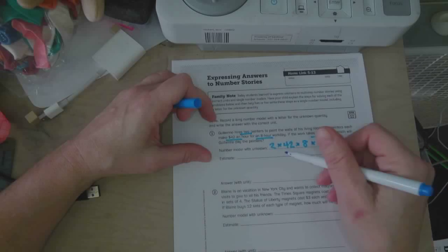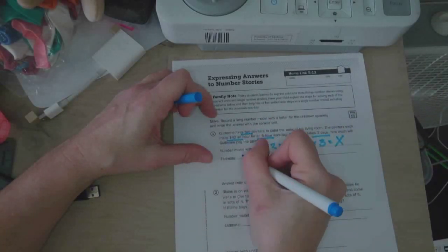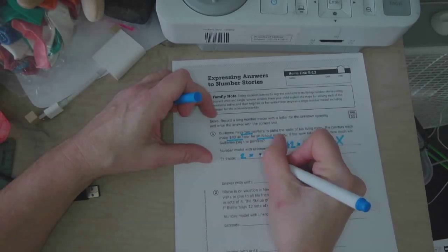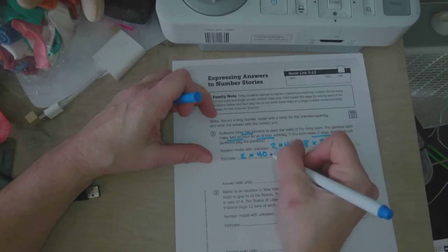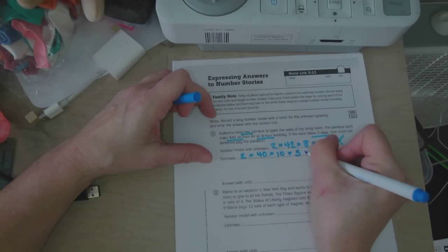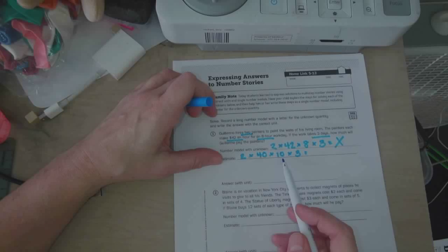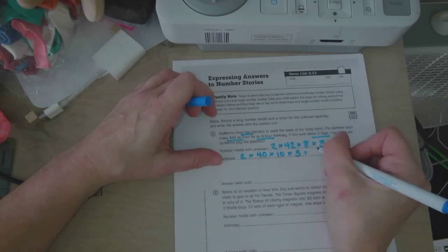So for our estimate, well, these numbers are pretty easy to work with, but for our estimate, we can do 2 times 40, times 10, times 3. So 2 times 40 is 80, times 10 is 800, times 3 is 2,400.